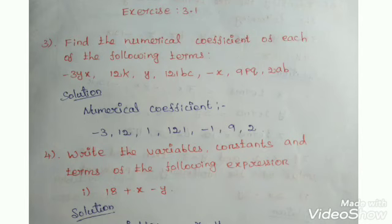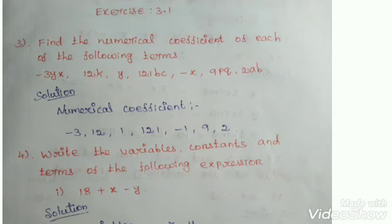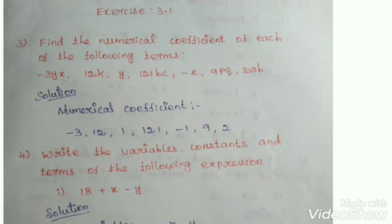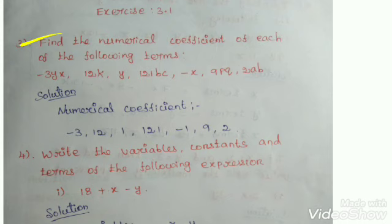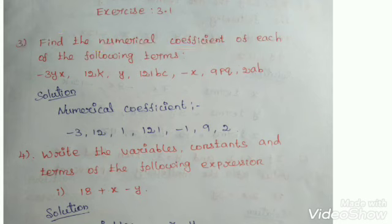See the question: Find the numerical coefficient of each of the following terms. The terms are: minus 3YX, 12KY, 121BC, minus X, 9PQ, 2AB. Numerical coefficient means numbers. What are the numbers here? See the first one, minus 3YX. What is the number? Minus 3.